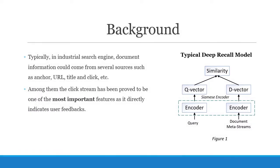In traditional web search, given a query, the documents are retrieved from large candidate corpus based on the relevance score. Typically in an industrial search engine, document information could come from several sources such as anchor, URL, title, and click.